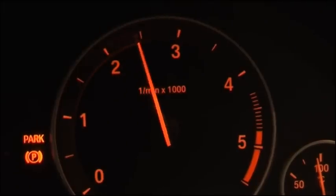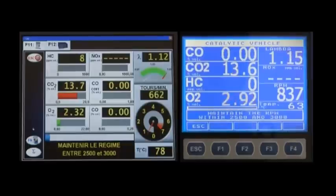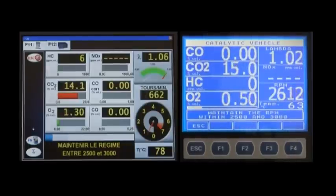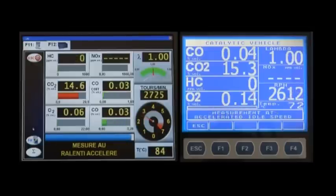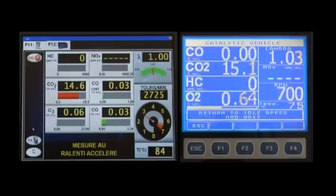Hold the engine speed between 2500 and 3000 RPM for one minute for fast idle measurement. Then return to idle for idle measurement.